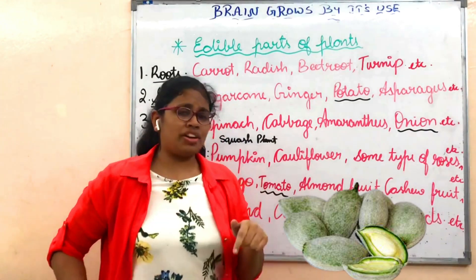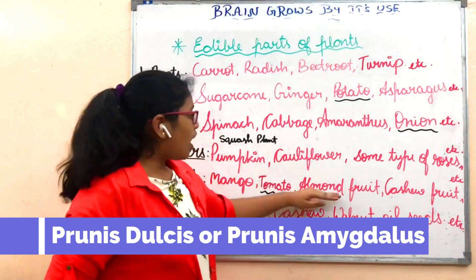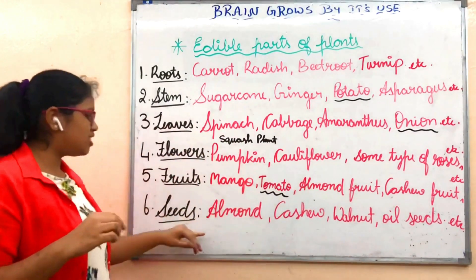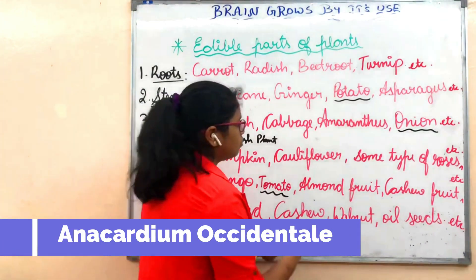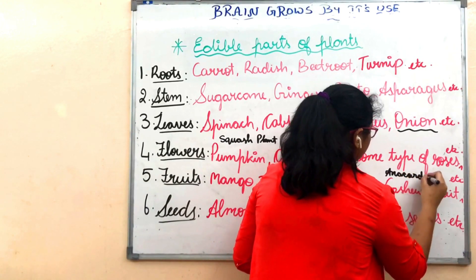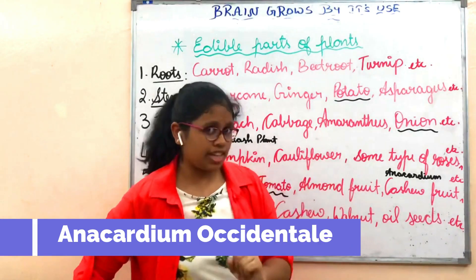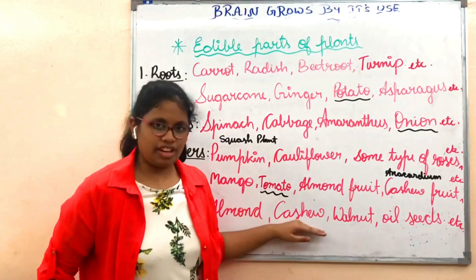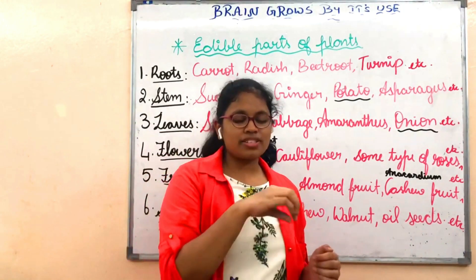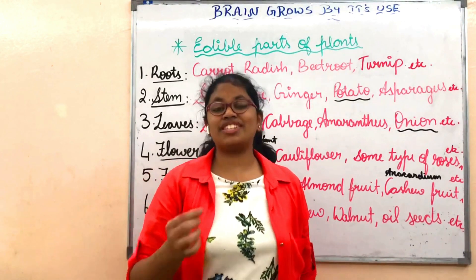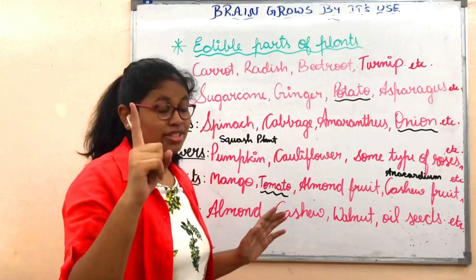Let me take almond fruit. Almond is the fruit of a tree called Prunus dulcis or Prunus amygdalus. Inside that almond fruit, almond seeds are present. Cashew fruit: cashew fruit is grown on trees called Anacardium occidentale. Inside the cashew fruit, the cashew seeds are there. In India, cashew fruits are sold on carts — they cut the cashew fruits, sprinkle some salt and chili powder, which tastes really great — a very tasty evening snack!